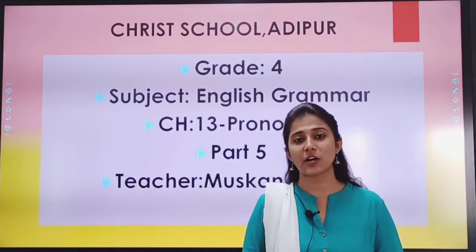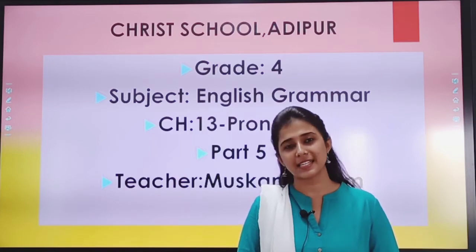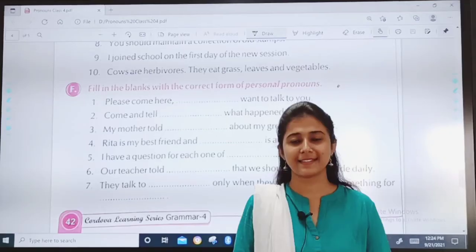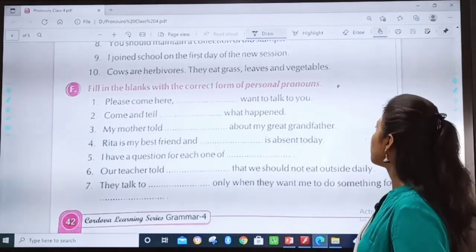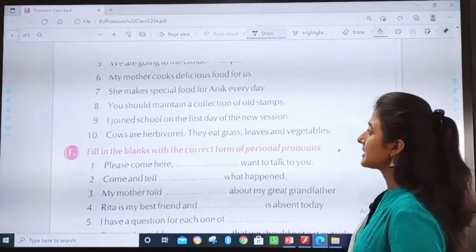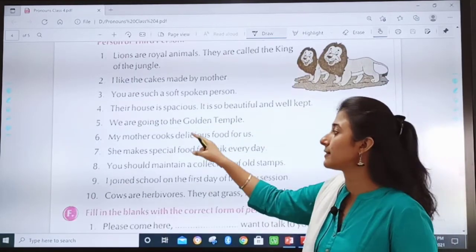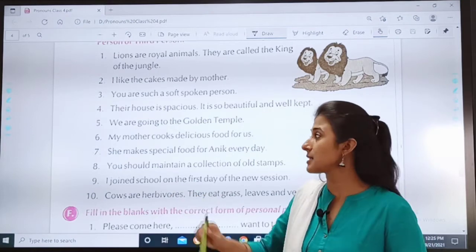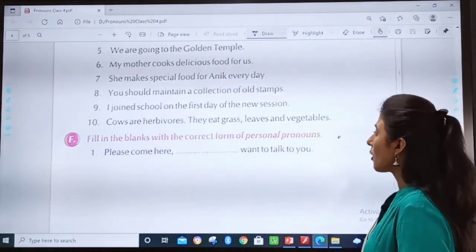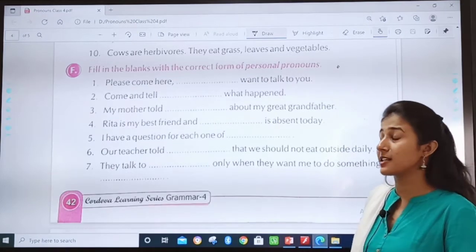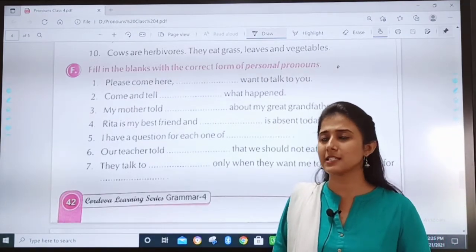Now come on children, take out your textbooks and let us move towards our next exercise. In our last video lesson, we have completed till exercise E. I have given you homework to complete the remaining numbers — I had done till 4 to 5 and the rest was your homework. I hope you have completed. Now moving further with exercise F, let us see what is there.